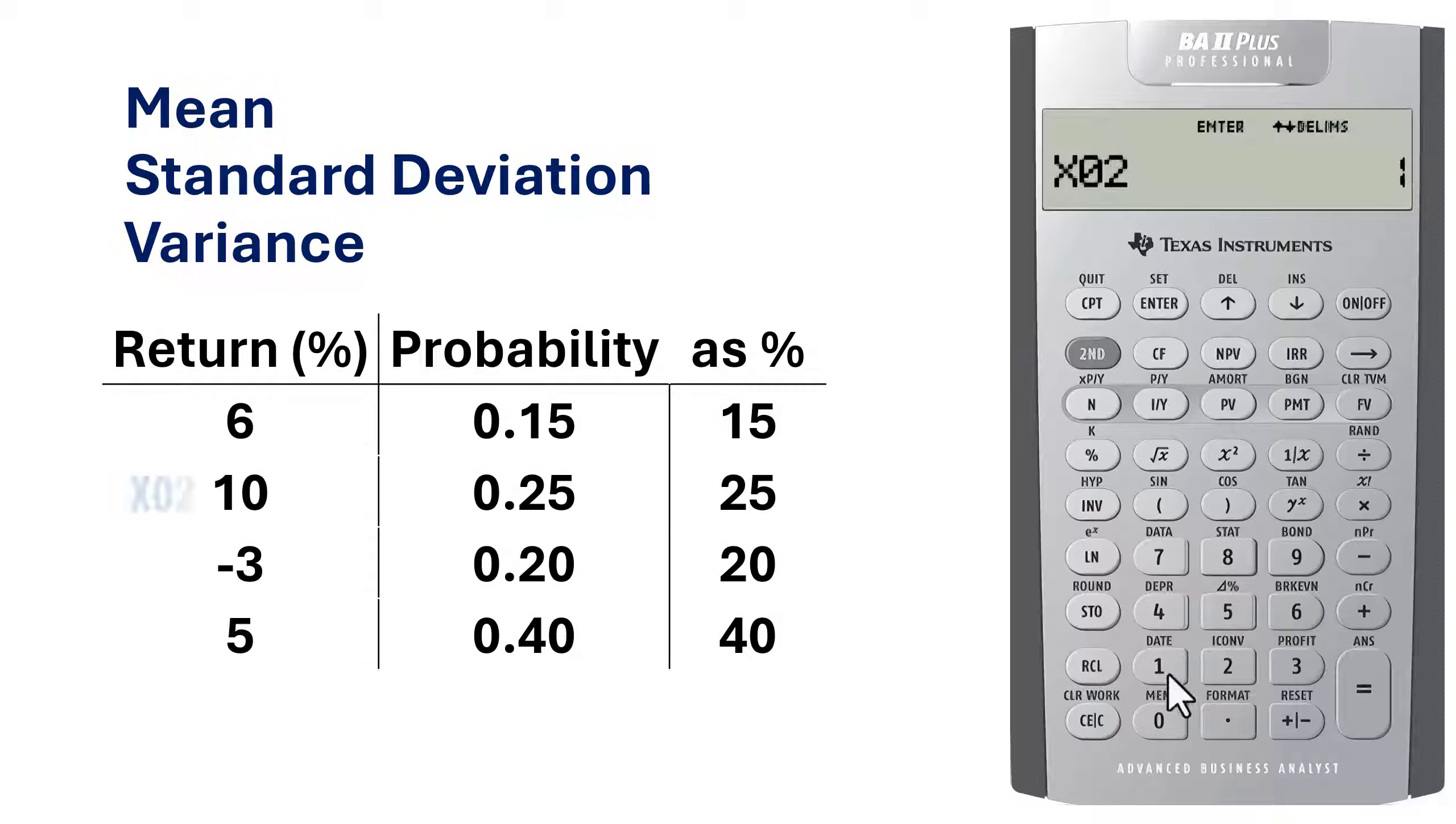Scroll down. X2 is 10, Enter, scroll down. Y2 will be 25, Enter.